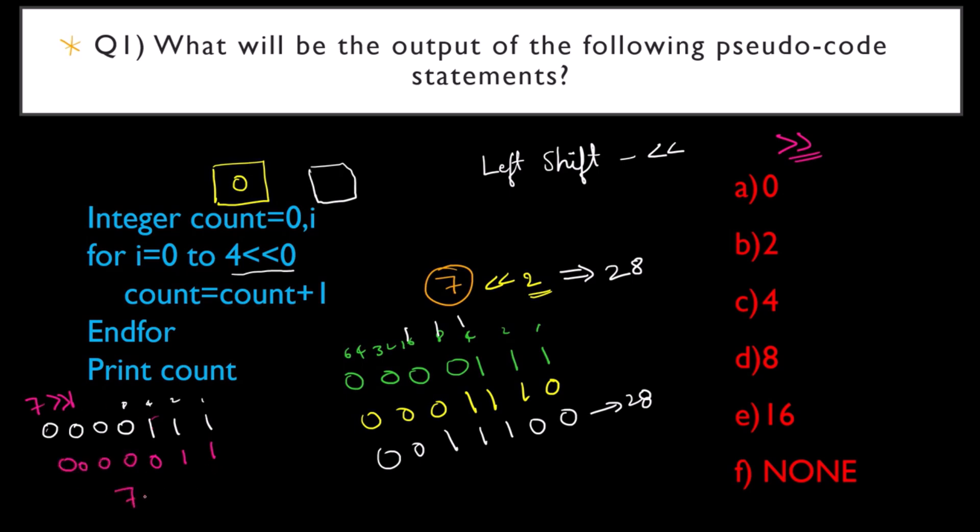When I right shift 7 one time, my answer will be nothing but 3.